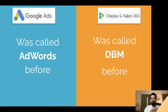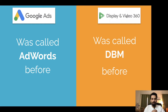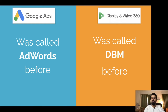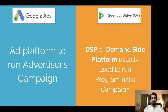Before we jump into the differences, I want you to know there is something common about the two platforms. Both platforms recently had their names changed — Google Ads was previously called AdWords, and Display and Video 360 was previously called DBM, short for DoubleClick Bid Manager.